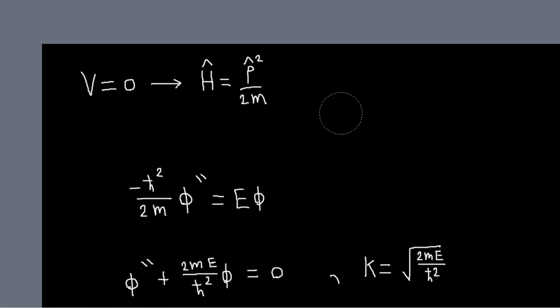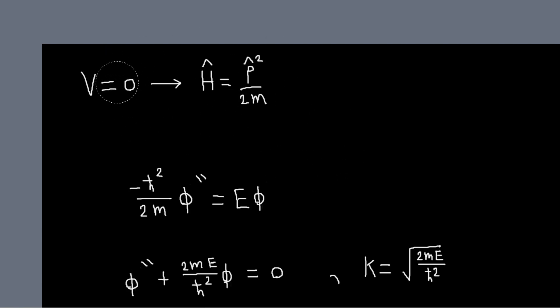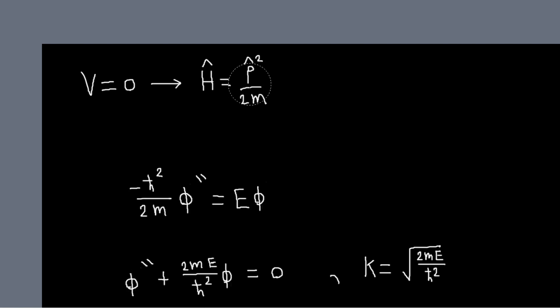In this problem we're going to look at a seemingly easier problem than what we've been dealing with, but we have a lot to talk about. We're looking at the free particle — the potential is just zero everywhere, so there's no well, meaning there can't be any bound states. Our Hamiltonian will just have the kinetic energy term, proportional to the momentum operator squared.